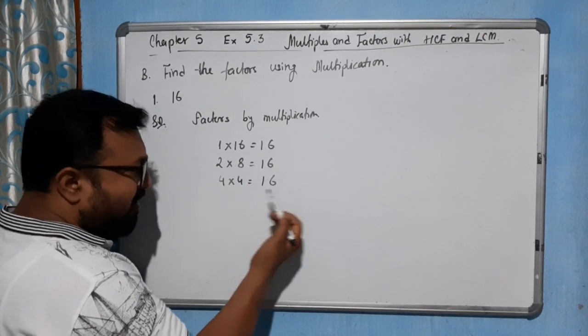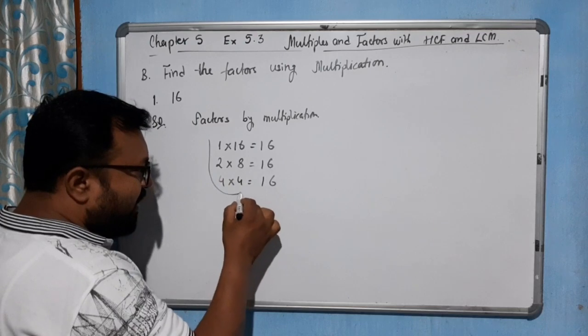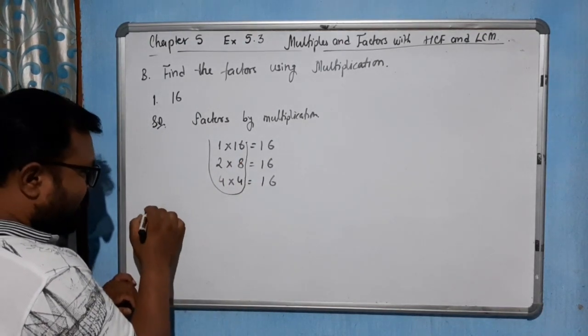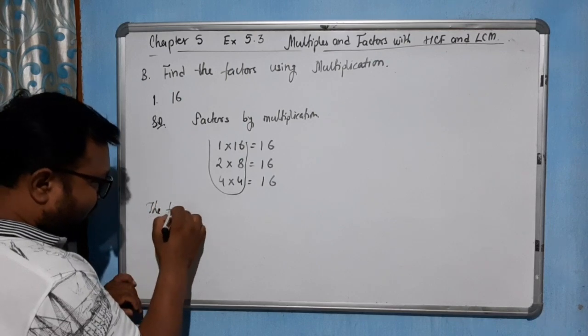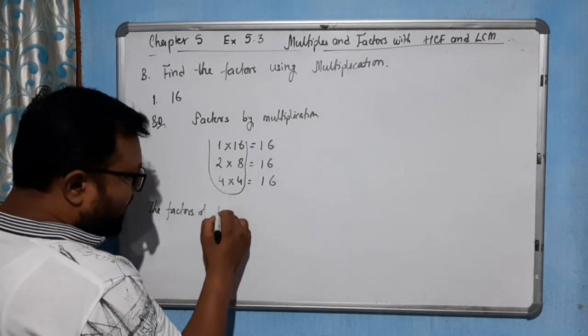Then 5 not possible, then 6 not possible, then 7 not possible. Then by 8, we can draw like this. So the factors of 16...